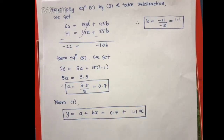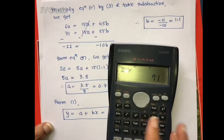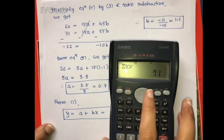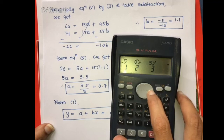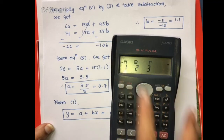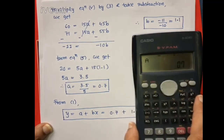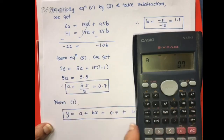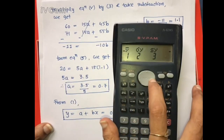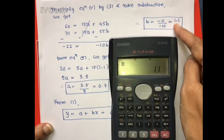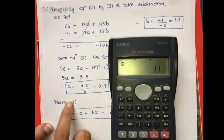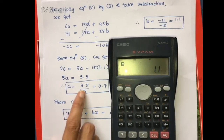By using the calculator, you can also verify whether your values of a and b are correct. Since we have already fitted the data, use the key Shift then Variation. Press 1 for a, and you get 0.7. Press Shift Variation then 2 for b, and you get 1.1, which confirms what we already found.